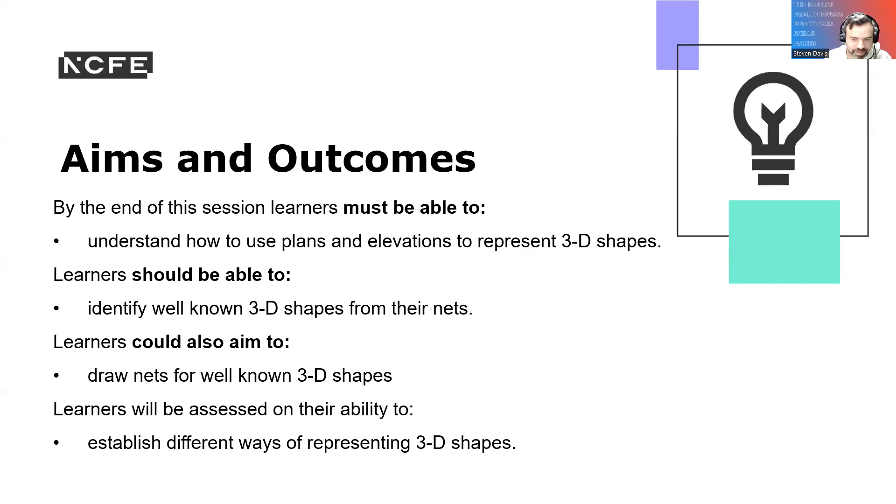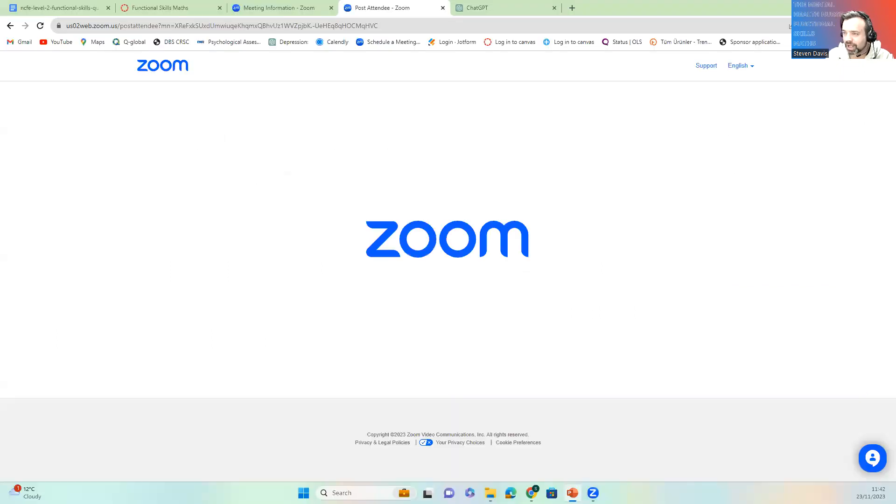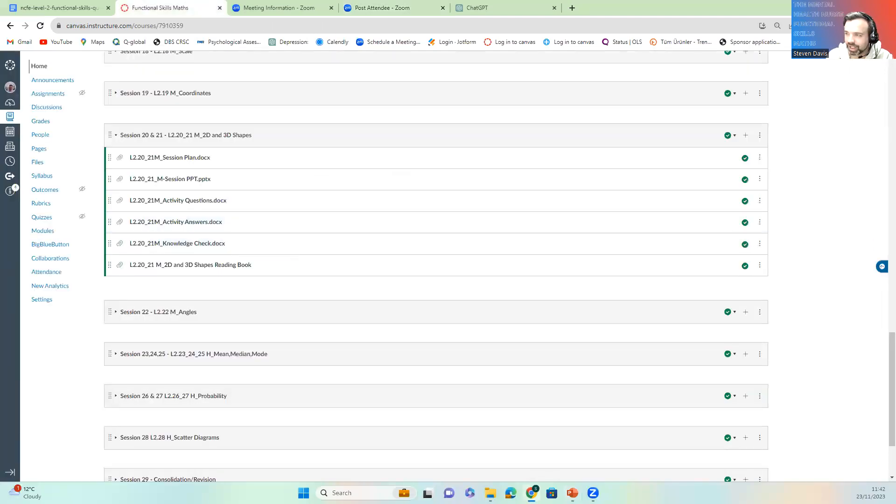So the aim of this session was to identify 3D shapes from their nets, draw them, and establish different ways of representing them. Please make sure you do your activities and test your knowledge and check back in Canvas. And I will see you for session 22.